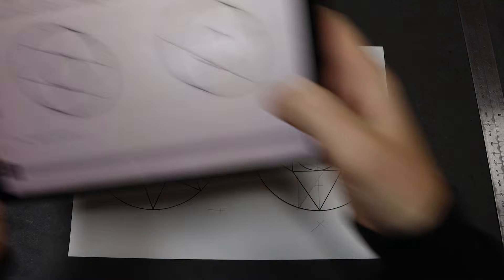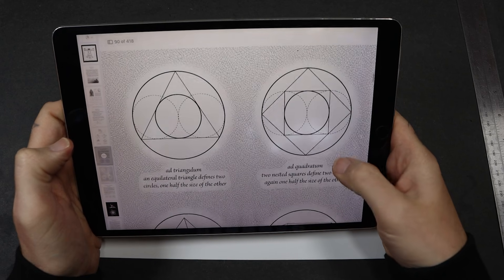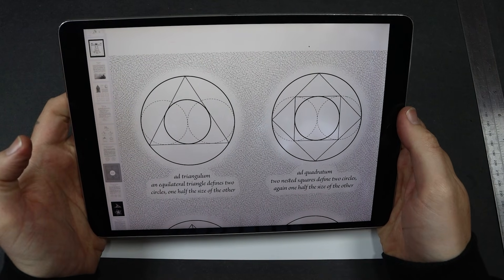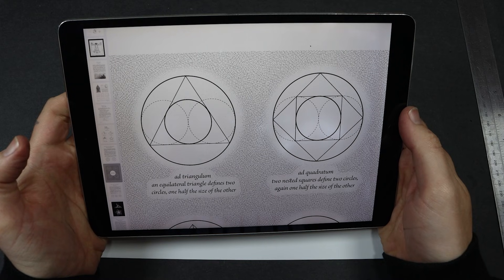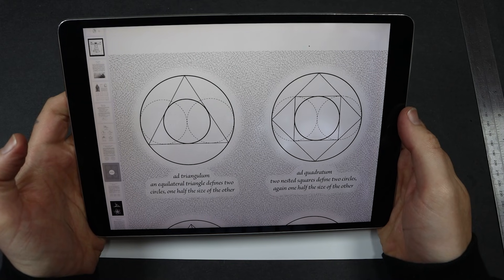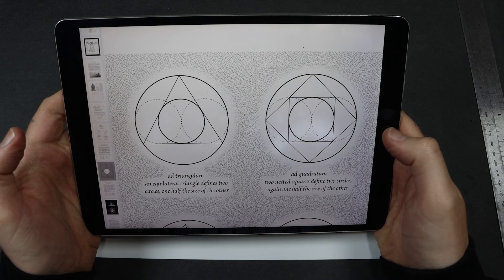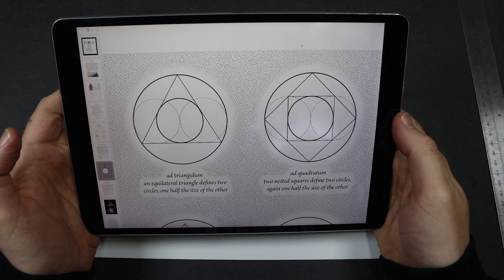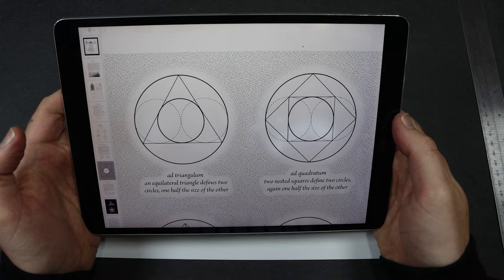So what should we have a look at next? I think... Well, let's do these. An equilateral triangle defines two circles, one half the size of the other. And this one, two nested squares, define two circles, again, one half the size of the other. Let's do it.